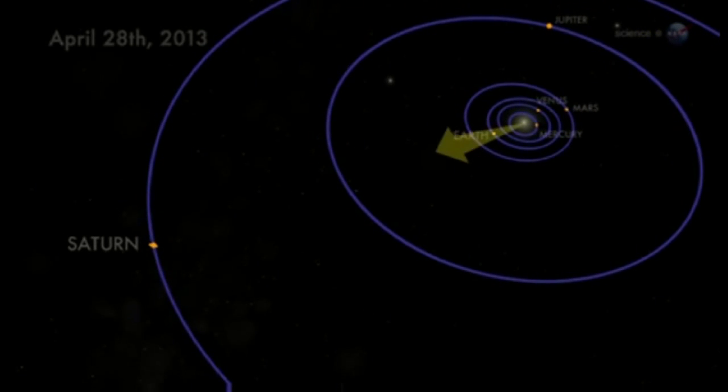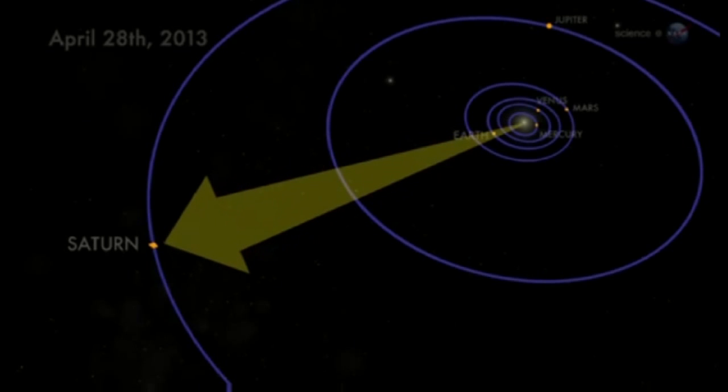Astronomers call this event an opposition, because Saturn will be opposite the Sun in the skies of Earth. The golden planet rises at sunset, soars almost overhead at midnight, and stays up all night long.